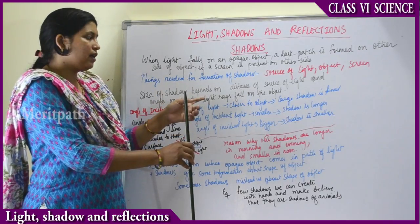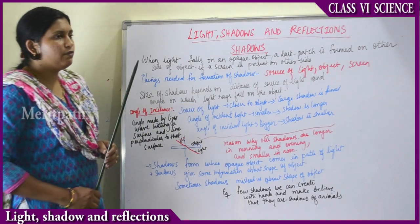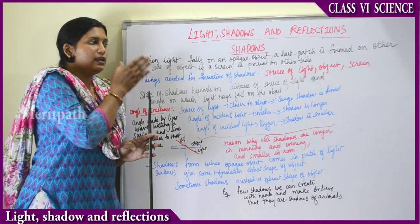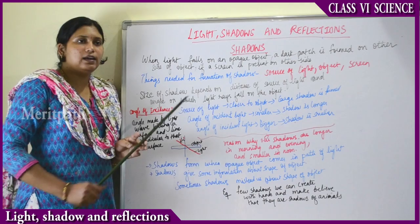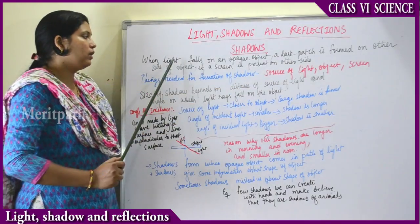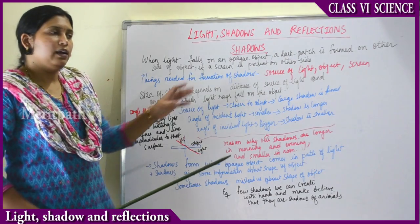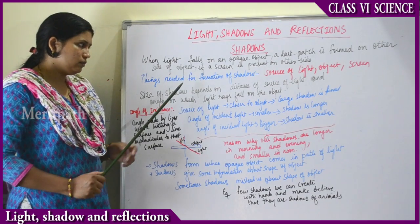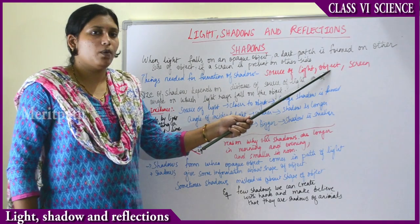When light falls on an opaque object and there is a screen behind, a dark patch — the shadow — is formed on that screen. A screen is mandatory on the other side for a shadow to form. The main things needed for the formation of a shadow are: a source of light, an opaque object, and a screen.